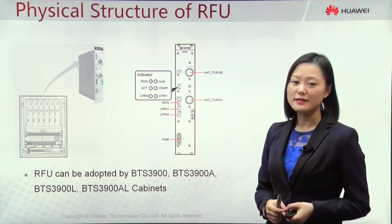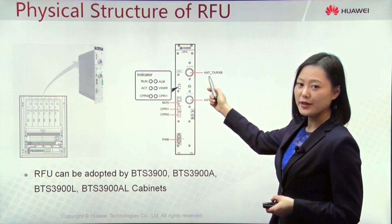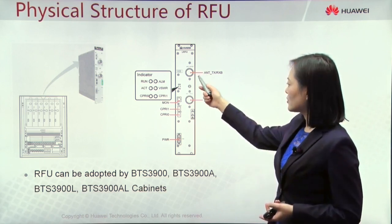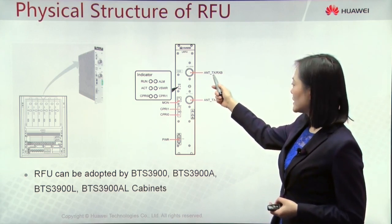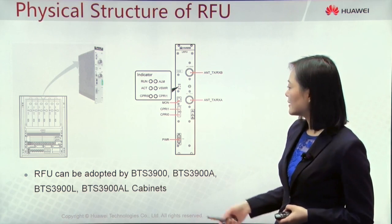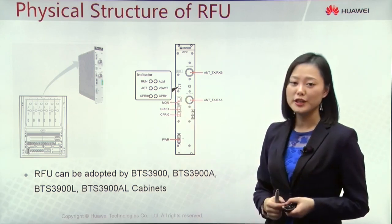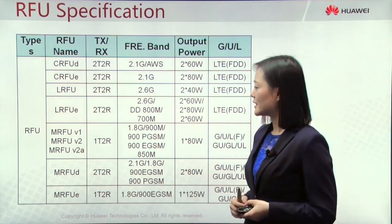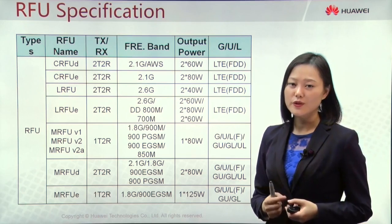The port named antenna TXRX-A means it is channel A, which can transmit and receive data. Here is antenna TXRX-B, meaning this B port, B channel, also supports transmission and receiving. If a port can only receive data, the name changes to antenna RX-B, without TX. There are six indicators on the front panel. The VSWR and ALM indicators normally should stay off. RFU is only used for FDD mode; TDD does not use RFU.